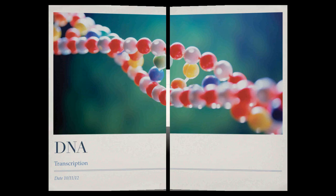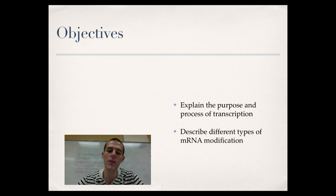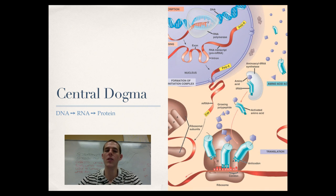So for today, here are the things I need you to know or be able to do by the end of the video. First one, explain the purpose and process of transcription. And the second one is to describe different types of mRNA modifications. So that's what we've got to do. Let's go ahead and get there, starting by talking about the central dogma of science.